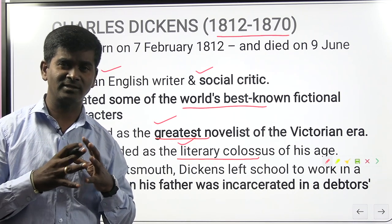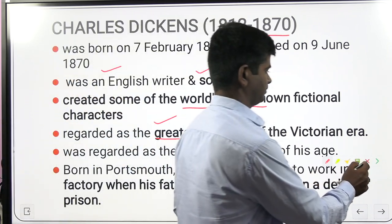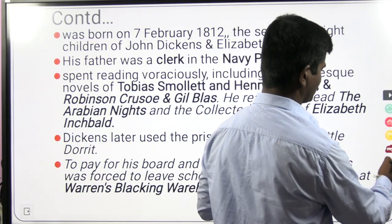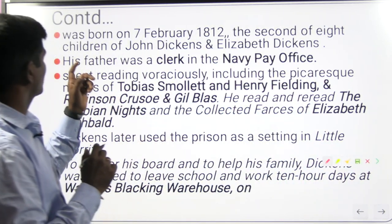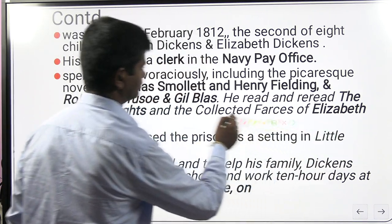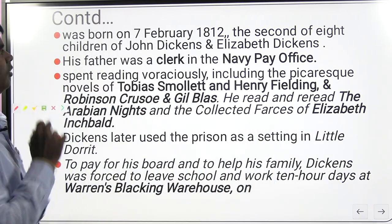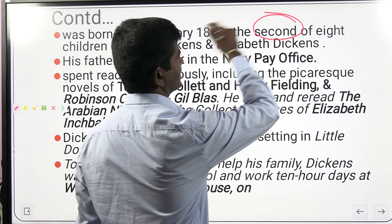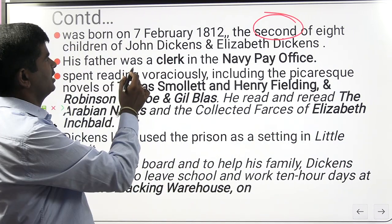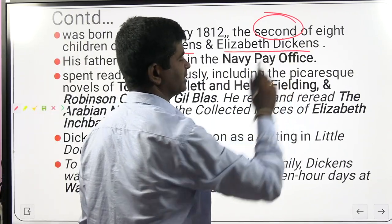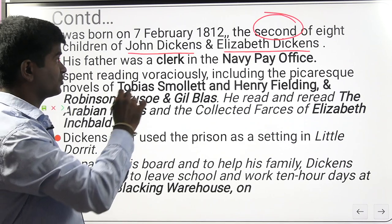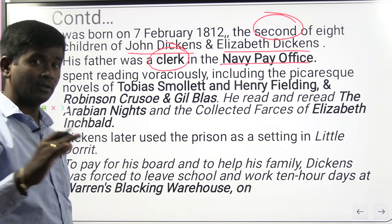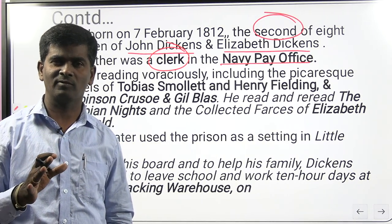Dickens left school at a very young age — at the age of 11 — where he had to work 10 hours a day. He was born on 7th February 1812, the second of eight children. His parents were named John Dickens and Elizabeth Dickens. His father was a menial clerk working at the Navy Pay Office.